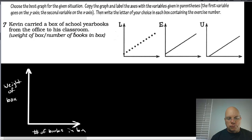I want you to try to figure out which one of these graphs represents this situation during the pause. But one thing to keep in mind is this point right here at the origin. We know the origin is zero-zero, so that would represent zero books in the box.